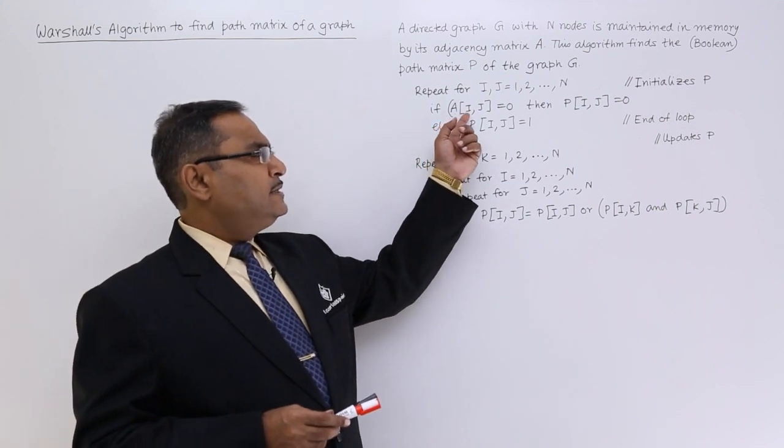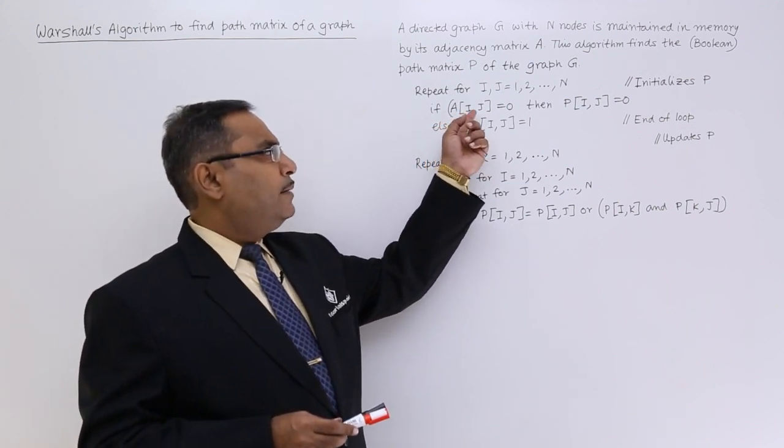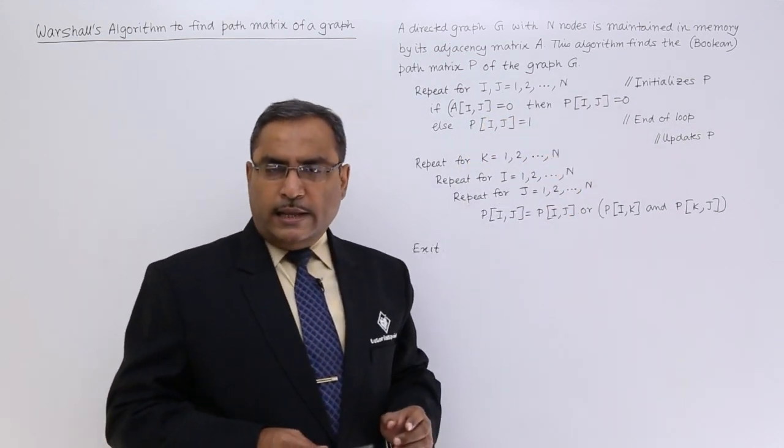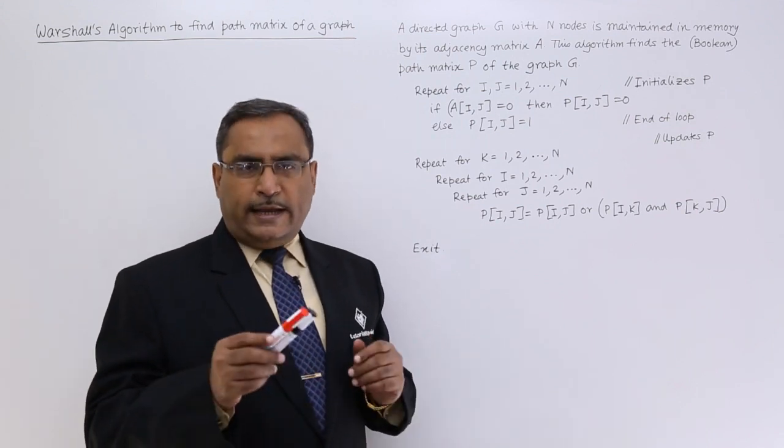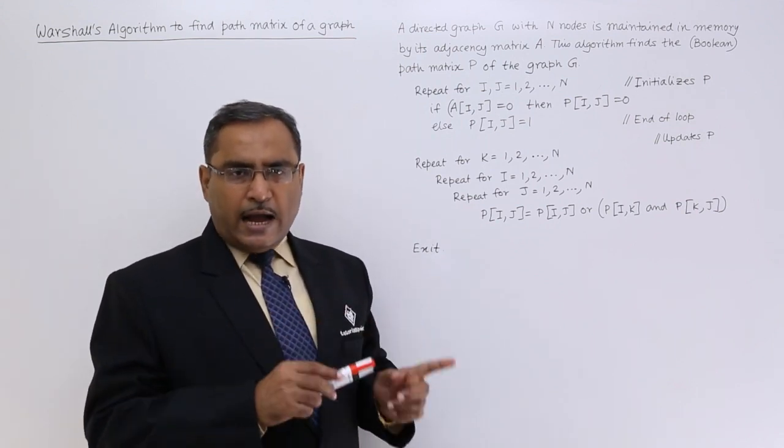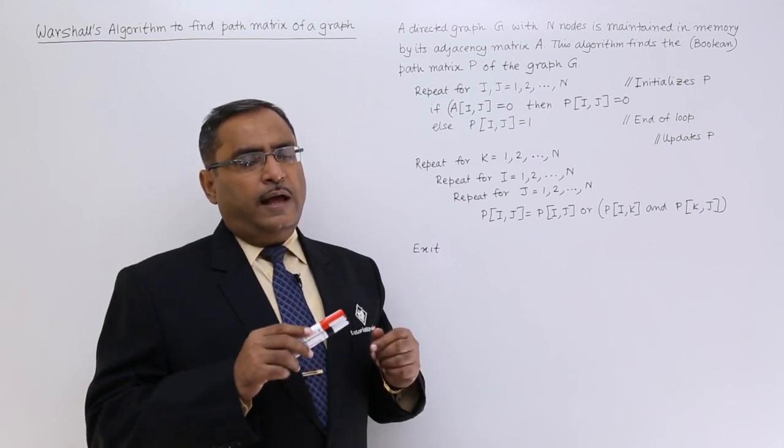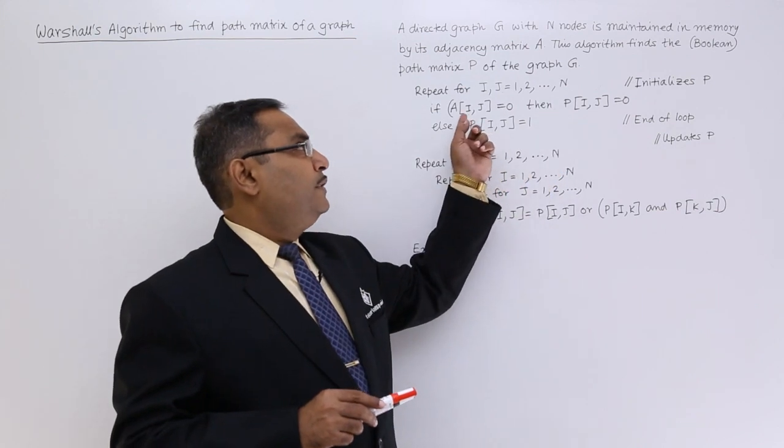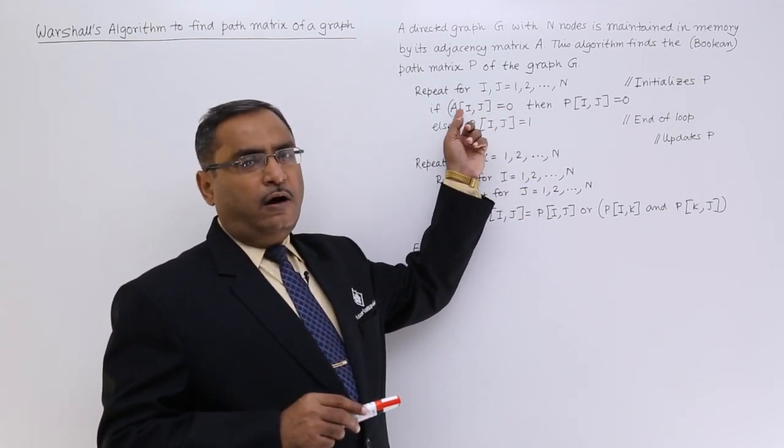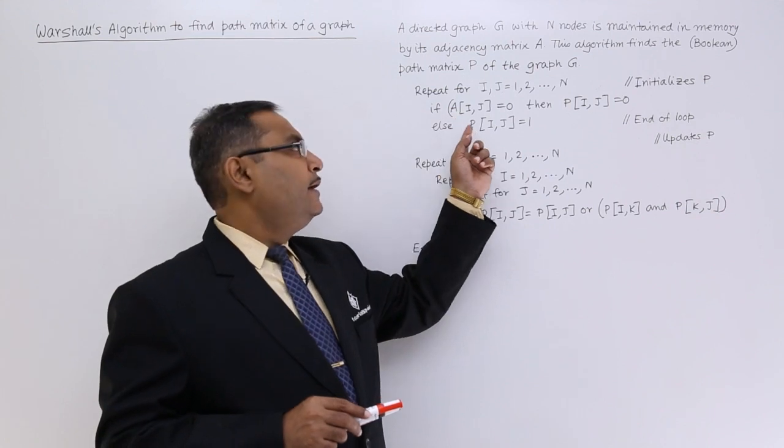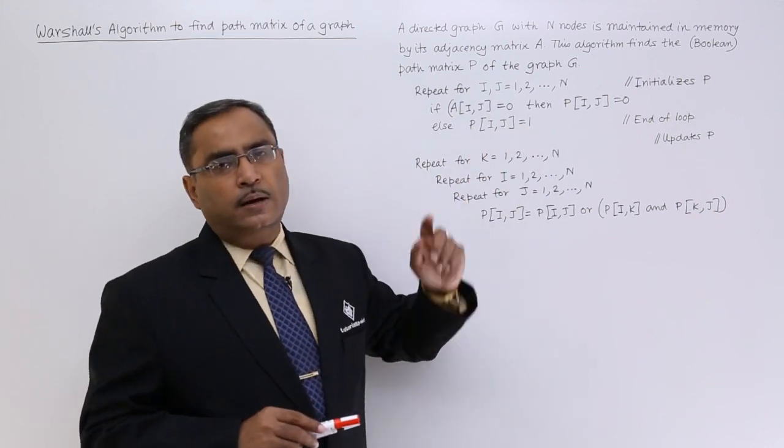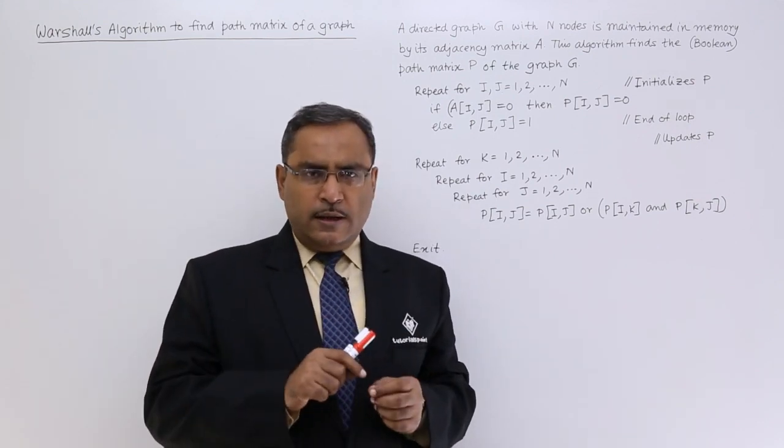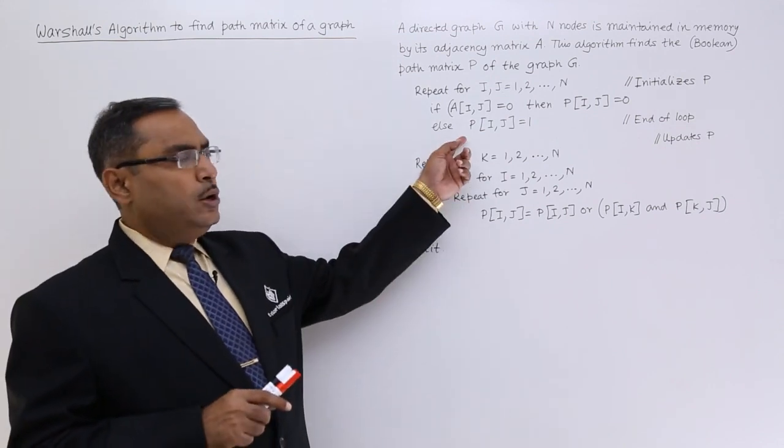If the adjacency matrix for row i and column j contains 0, then the path matrix will be containing 0. That means there is no direct edge between i and j. But in case of any non-zero value at i,j location of the adjacency matrix A, then the path matrix i,j location will be filled up with 1. That means there is some way to move from this node to that, because the edges are there. Initially it will be formed.